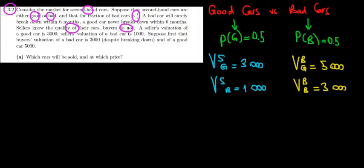The sellers know the quality of their cars, the buyers do not, so we have a problem of information asymmetry. A seller's valuation of a good car is 3,000 euros, the seller's valuation of a bad car is 1,000 euros. The buyer's valuation of a bad car is 3,000 euros and the valuation of a good car is 5,000 euros.